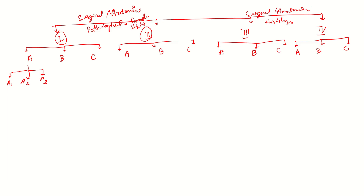Stage 1A1 involves tumor limited to the endometrium. Stage 1A2 involves myometrium less than or equal to 50% — only the superficial myometrium — with no LVSI. Stage 1A3 involves extension into the adnexa, that is the fallopian tube or ovary. There is an important difference between 1A3 and 3A1 which will be discussed later.